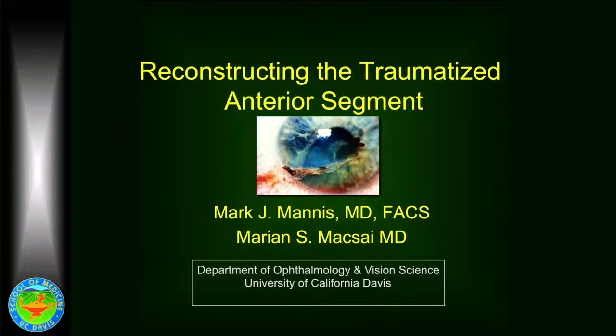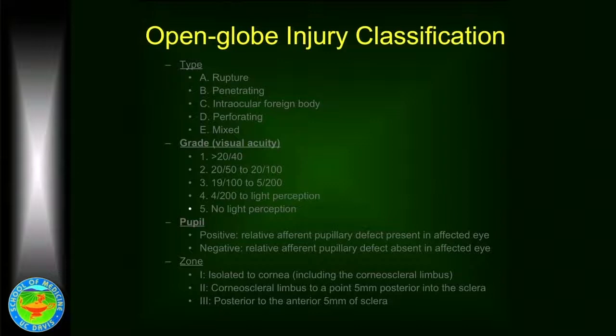A little bit about the management of trauma, since it is something that every ophthalmologist has to deal with. Trauma can be classified into two different groups: those trauma events which are open globes and those which are closed globes. The open globes can be classified into ruptures, penetrating trauma, intraocular foreign bodies, or perforating trauma.